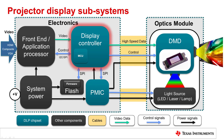Within the controller, there is also a microcontroller that executes software commands to manage the chipset operations. The DLP chipset also uses application-based image processing algorithms that improve the quality of the displayed image and optimize the power consumption of the projector. Finally, depending on the application, some systems use dual controllers to support higher video resolution, such as 4K UHD.